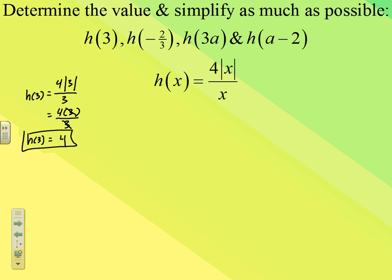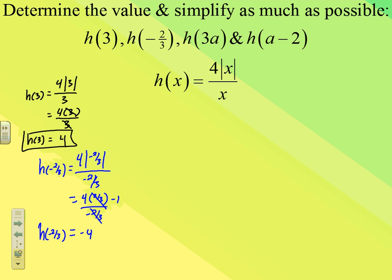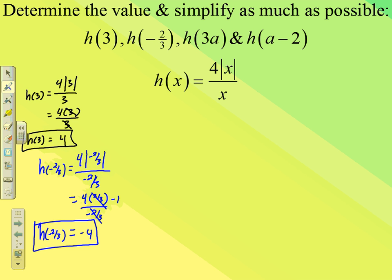For h(-2/3): we substitute to get 4 × |(-2/3)| / (-2/3). The absolute value of -2/3 is 2/3, so we have 4 × (2/3) / (-2/3). The 2/3 in the numerator and 2/3 in the denominator simplify to give -1. So 4 × (-1) = -4. H(-2/3) = -4.